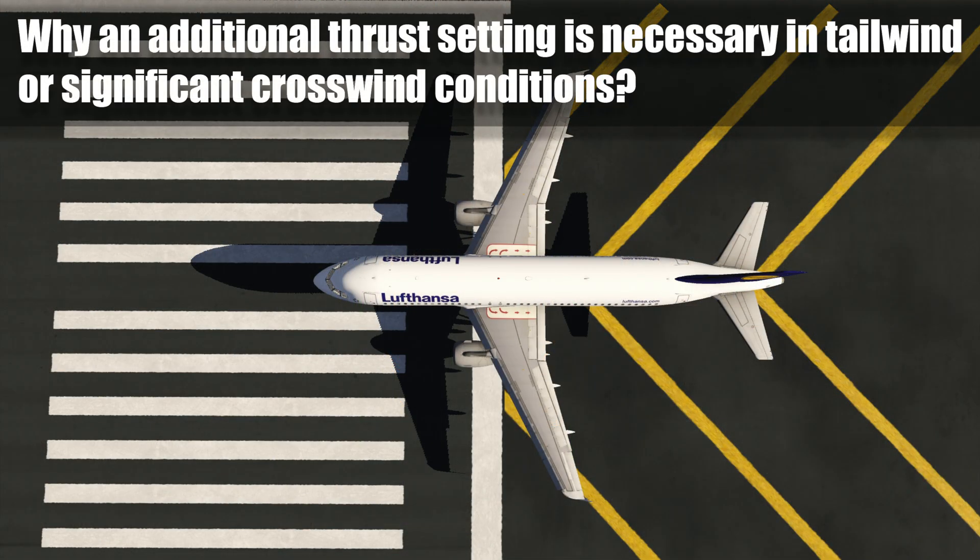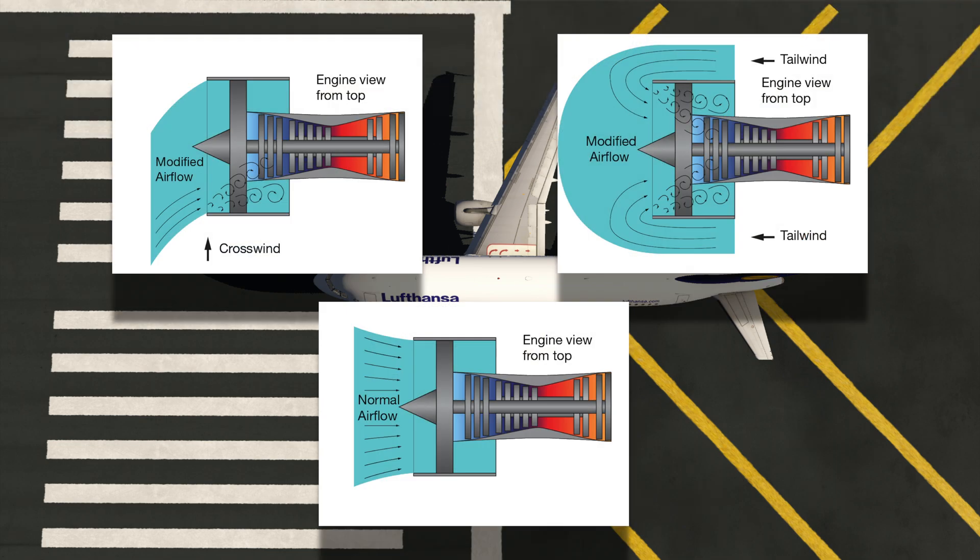Why an additional thrust setting is necessary in tailwind or significant crosswind conditions. In tailwind and significant crosswind conditions, the airflow entering into the engines is modified. Some perturbations may appear downstream of the leading edge of the engine inlet and potentially cause an engine stall if the perturbed airflow enters the core of the engine. Typical airflow distortion affecting the fan and engine core with associated airflow perturbations can be seen in these figures.